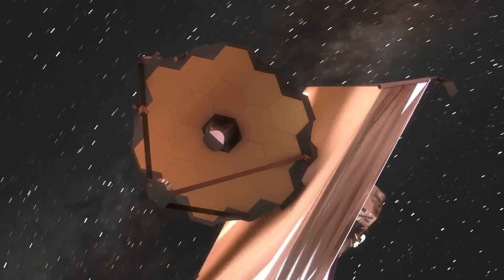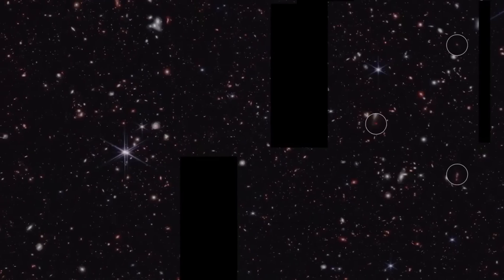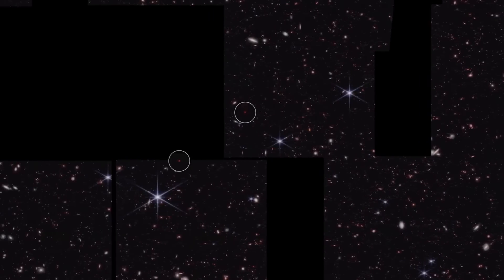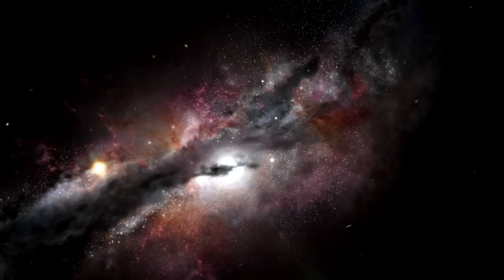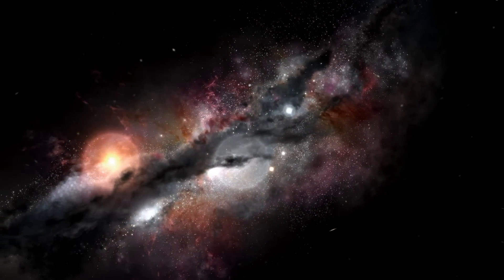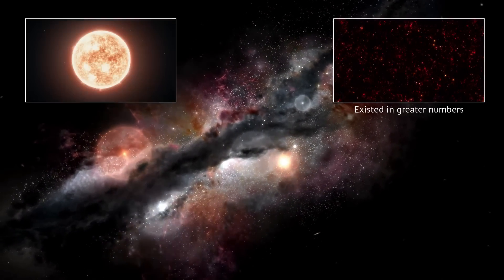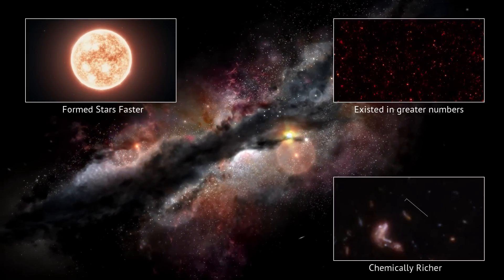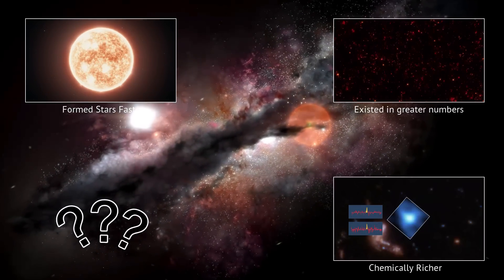And that's where things get really exciting. The more we look, the more we find. And every discovery chips away at our assumptions. If galaxies like MACS0647-JD existed in greater numbers, formed stars faster, and were chemically richer than we thought possible, what else are we missing?